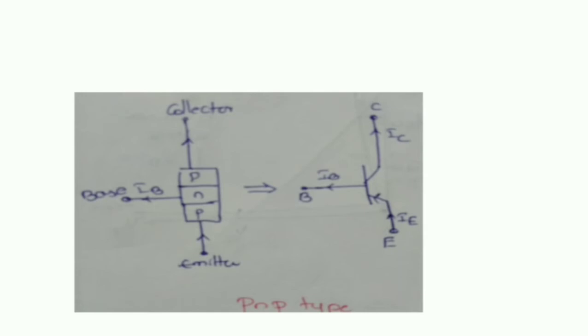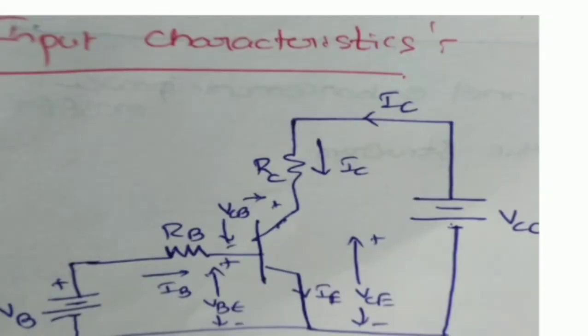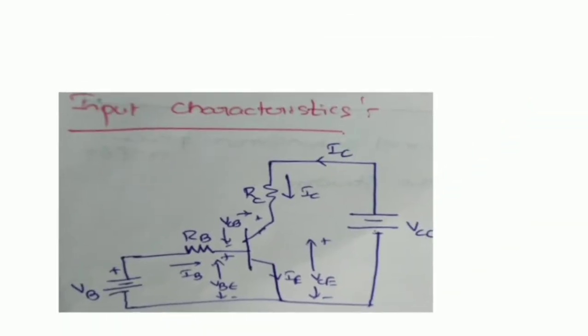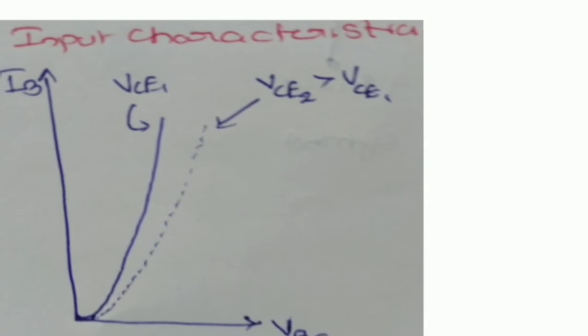The next topic is steady-state characteristics. In the case of the steady-state characteristics, the first one is input characteristics. VBE is the input voltage and IB is the input current. VCE is the output voltage and IC is the output current. The input characteristics show the relationship between the base current IB and VBE.